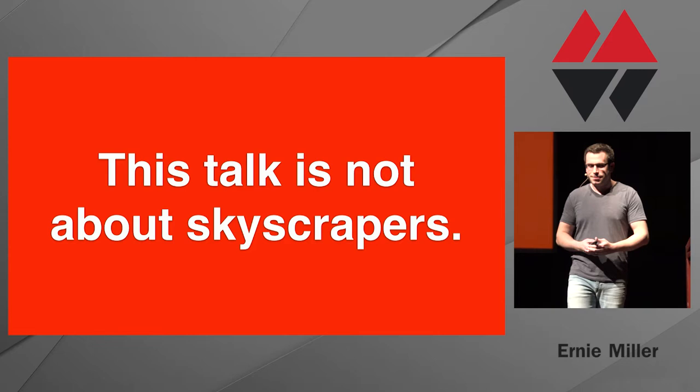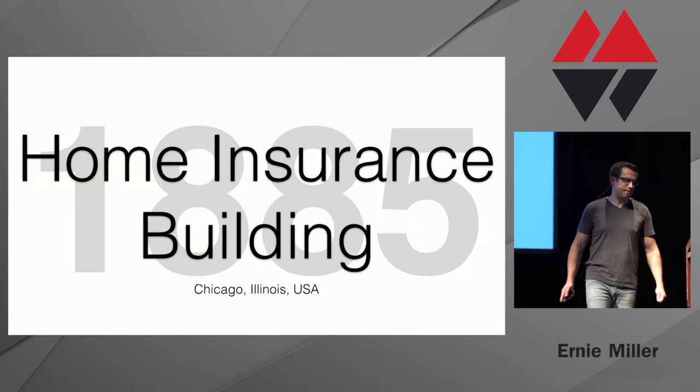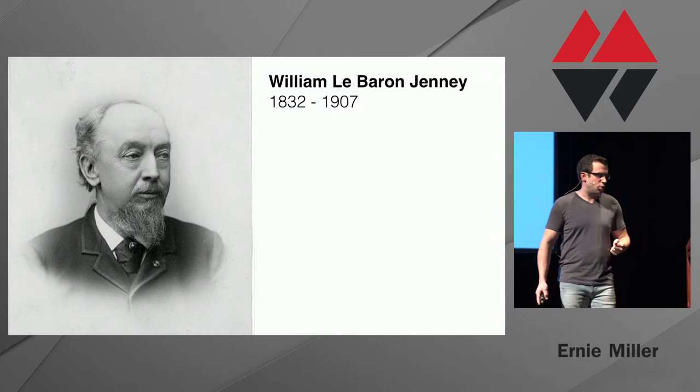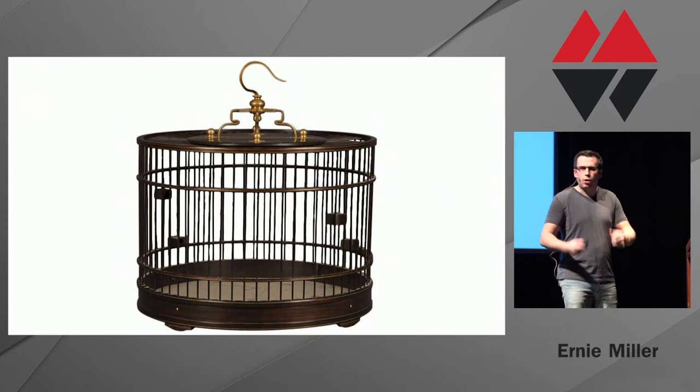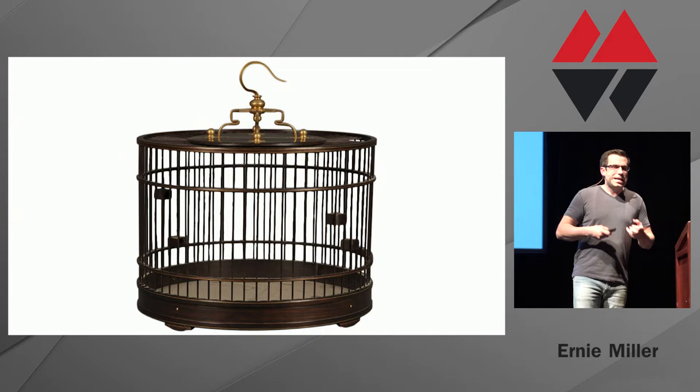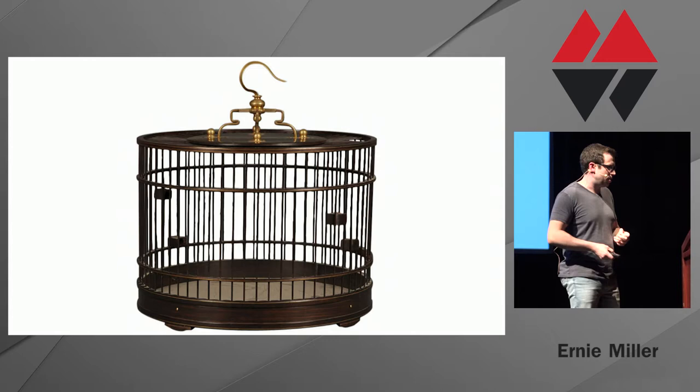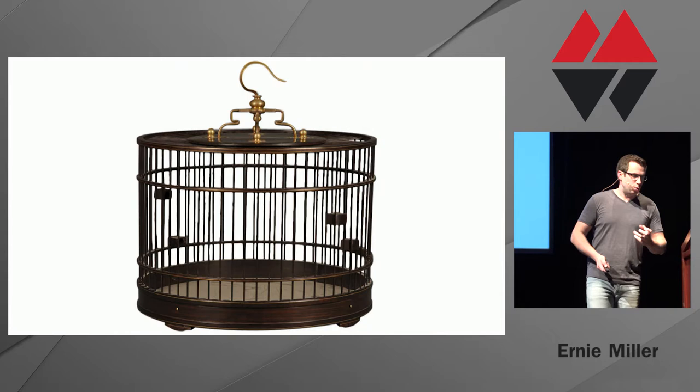The next skyscraper we're going to talk about is the Home Insurance Building, built in 1885. The architect tasked with building it was William LeBaron Jenny. The story goes that Jenny left work unusually early one day, and his wife jumped up to greet him, setting a heavy book she was reading on a birdcage. Inspiration struck — if so frail a frame of wire would sustain so great a weight without yielding, would not a cage of iron or steel serve as a frame for a building? That was supposedly the revelation he had.